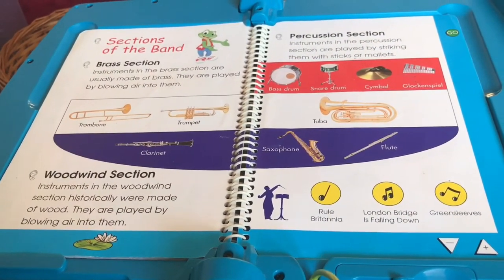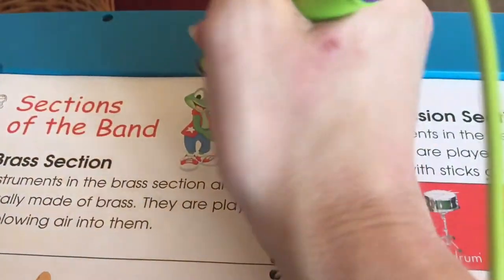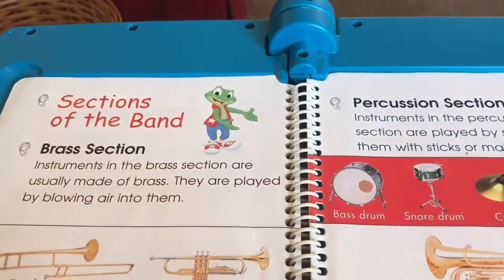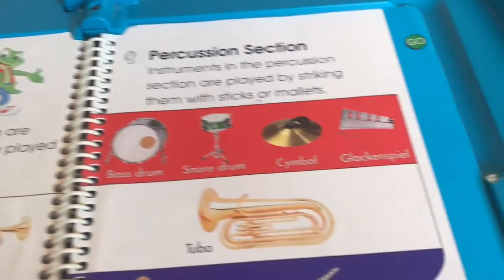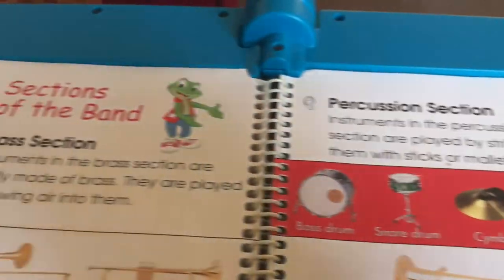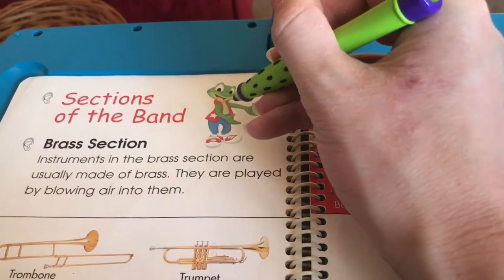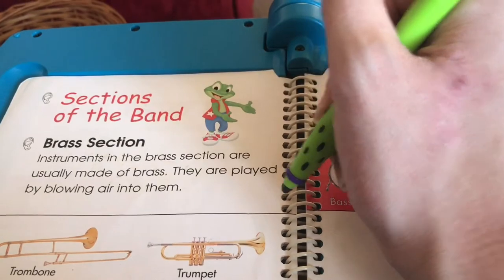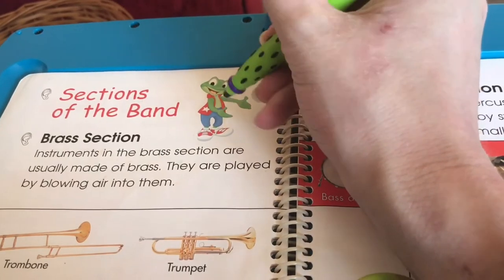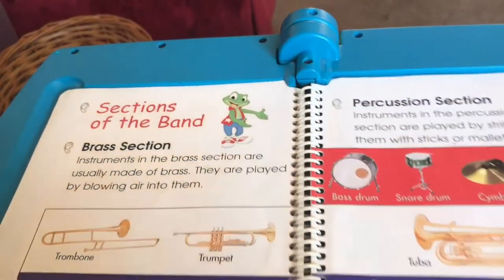To play again, touch the lily pad. Isn't it cool how the sections mix together? Leap's favourite instrument is the glockenspiel. Try touching your favourite instrument. My favourite instrument is the glockenspiel. Isn't it cool how the sections mix together? Try touching your favourite instrument.